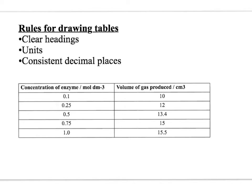The headings need to be clear — not just 'concentration' or just 'enzymes', not just writing the word 'amylase', but something like 'concentration of enzyme'. And then 'volume', not 'amount', so 'volume of gas produced'. It's important to have the correct units, so moles per decimetre cubed and centimetres cubed, written after a slash or in brackets.